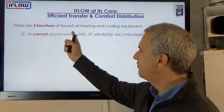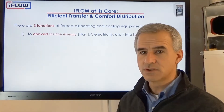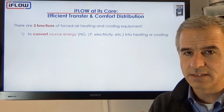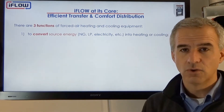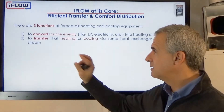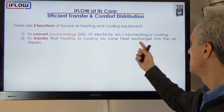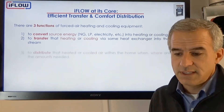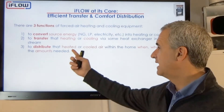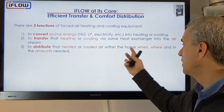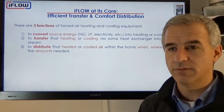To summarize the three functions of any HVAC equipment: number one is to convert the energy source — whether natural gas, propane, or electricity — into heating or cooling. Second is to transfer that heating or cooling via some heat exchanger into the air stream. And then once it's in the air stream, we need to blow and distribute that conditioned air throughout the home, where, when, and in the amounts needed — that's the job of the blower.